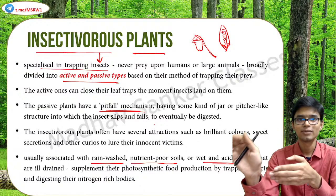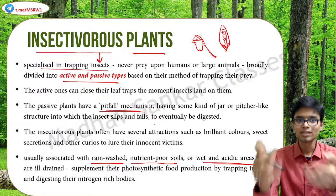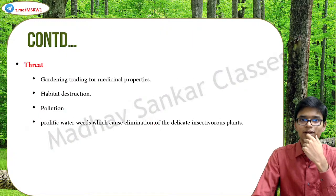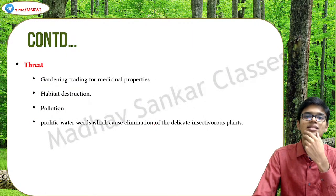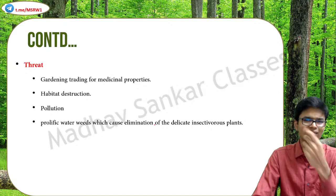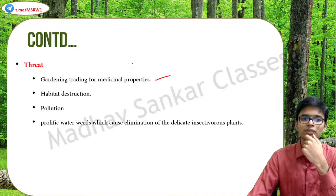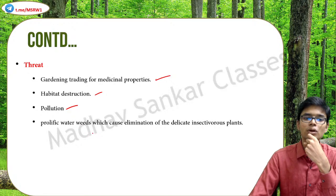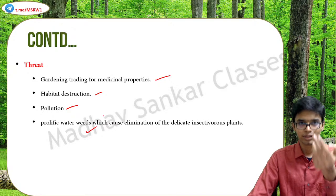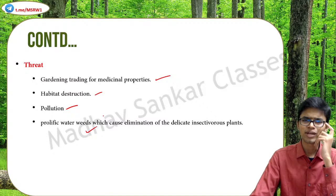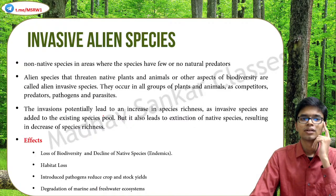These plants have such mechanisms to trap insects because their basic nourishment features are not satisfied by the surrounding ecosystem, so they have to go for adequate adaptive measures. The threats faced by these plants include gardening, trading for medicinal properties, habitat destruction, pollution, and invasive species and water weeds.